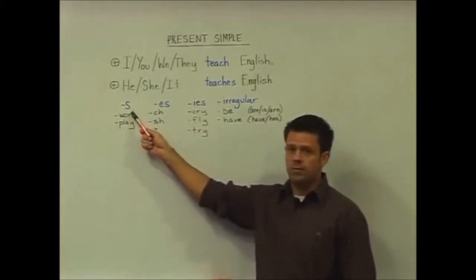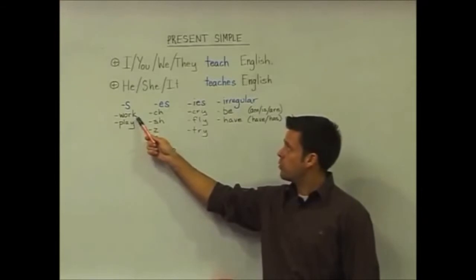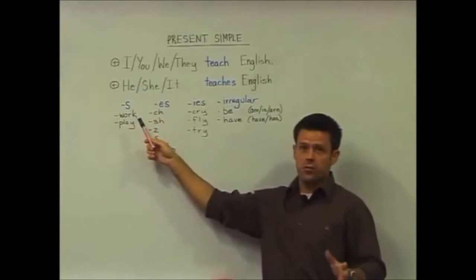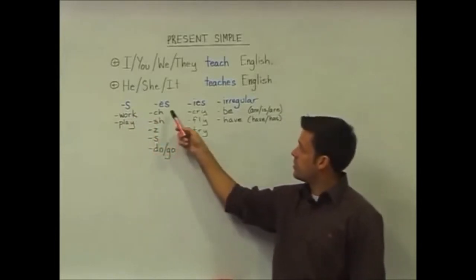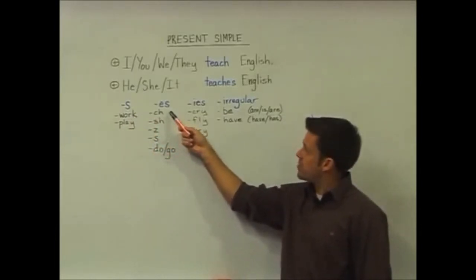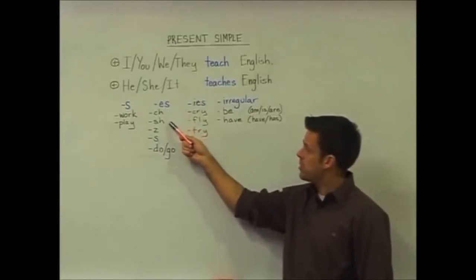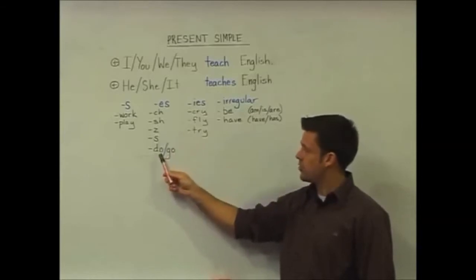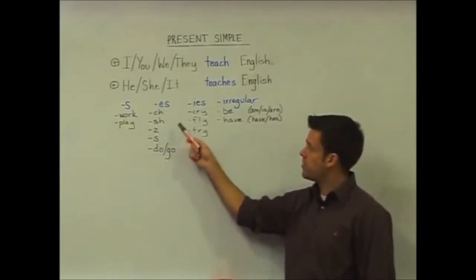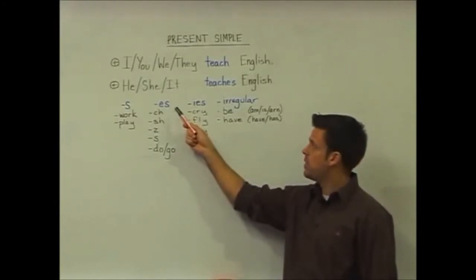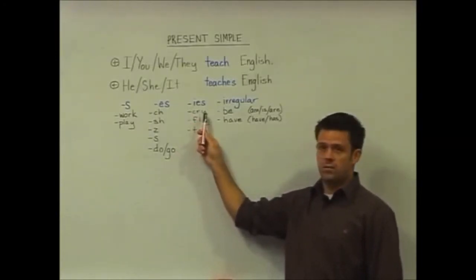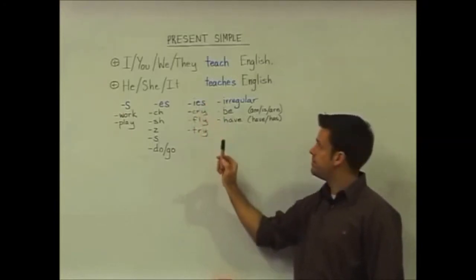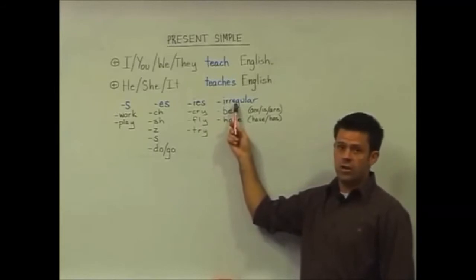First, and most common, we simply add an 's' for verbs like 'work' and 'play'. However, for verbs with spelling patterns ending in ch, sh, z, s, and shorter verbs like 'do' and 'go', we add 'es'. Then for verbs that end in a consonant and y, we drop the y and add 'ies'. Finally, we have our irregular verbs: be and have.